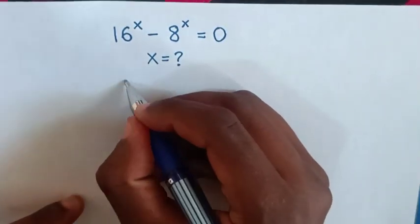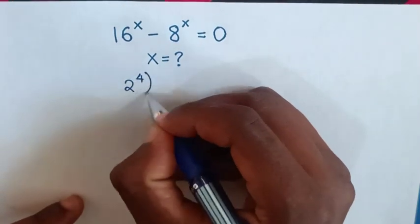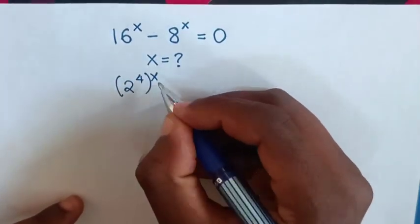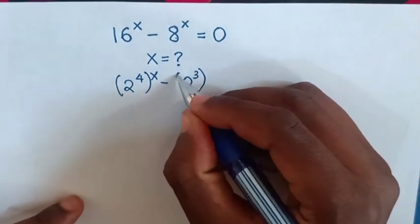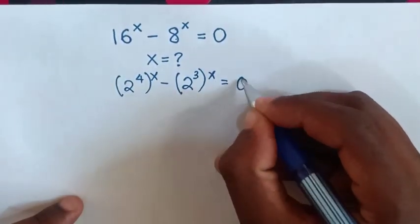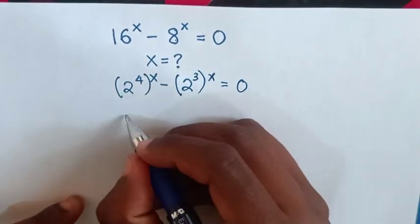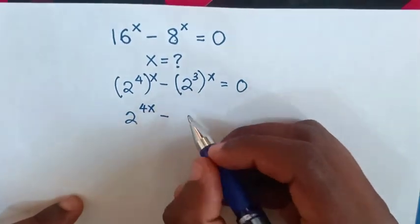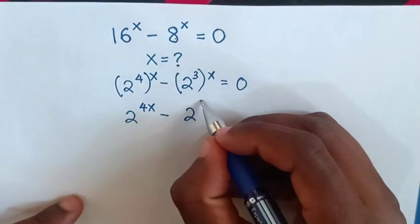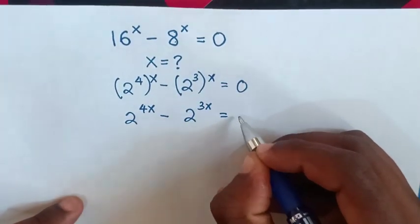So first, 16 is same as (2^4)^x minus 8 is same as (2^3)^x is equal to 0. Then in here it will be 2^4x minus 2^3x is equal to 0.